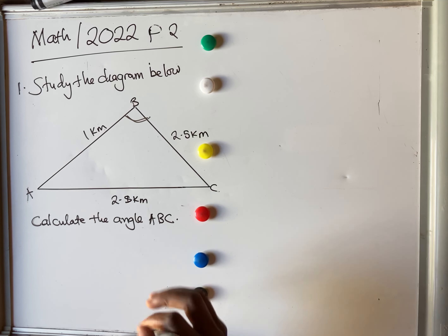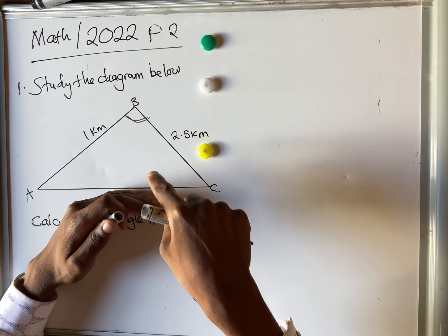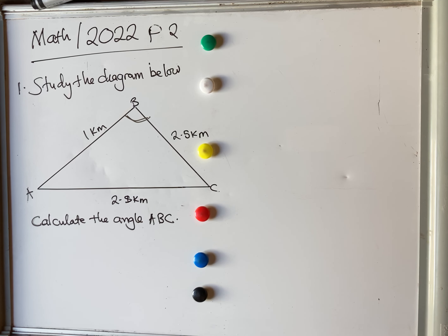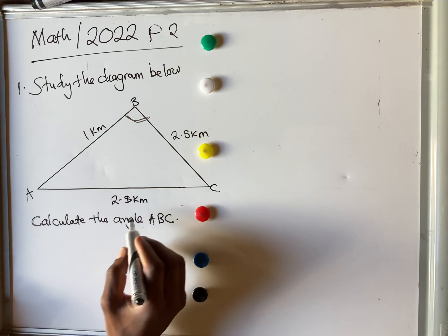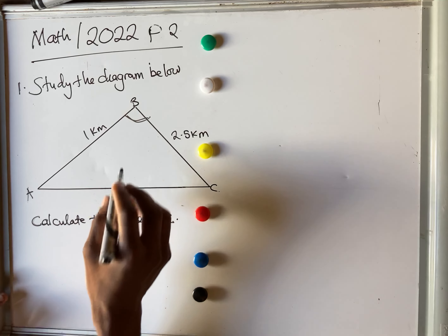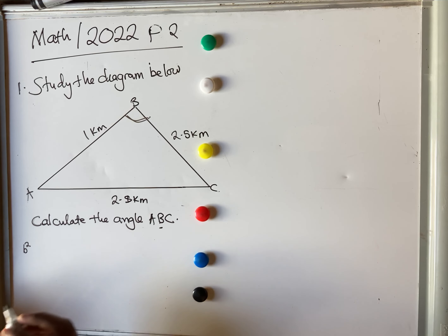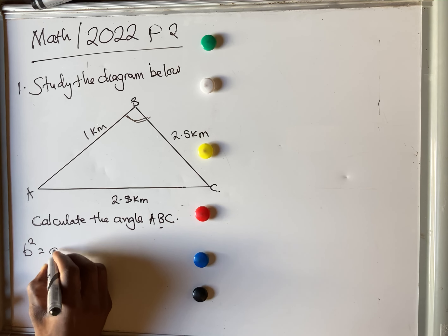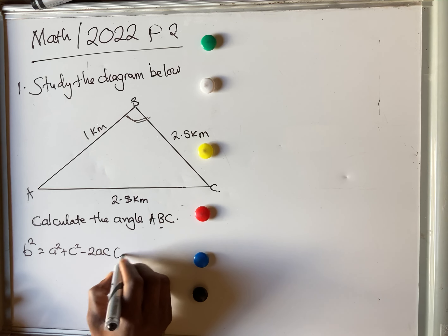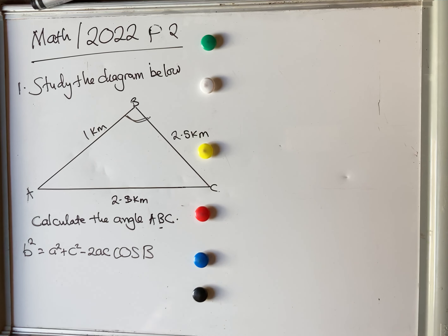There are two situations in which you use the cosine rule: one is when you've been given all three sides, and the other is when you've been given two sides with one angle in the middle. In this case we've been given all three sides, so we use the cosine rule. Since we're looking for angle B, we express the formula in terms of B: b² = a² + c² − 2ac·cos B.